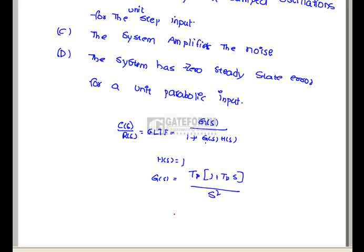But Statement D: The system has zero steady state error for unit parabolic input. The steady state error is defined as